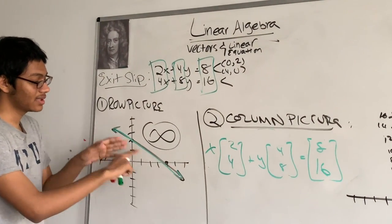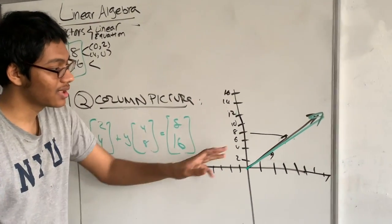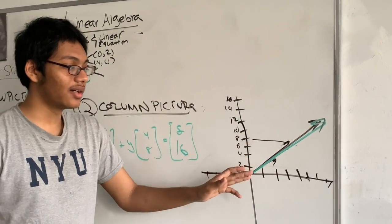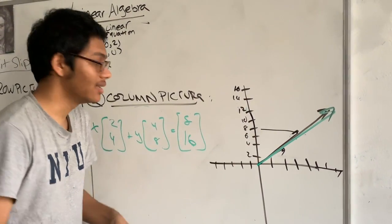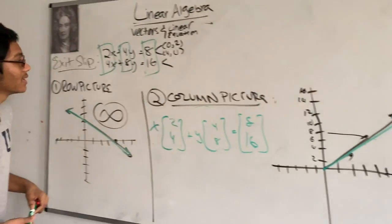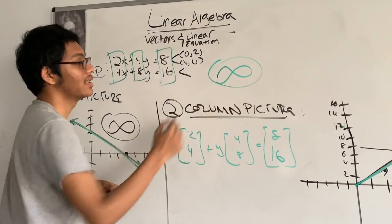The row picture tells me all my solutions lie on this line, meaning there's an infinite number of solutions. The column picture tells me all my vectors are scaled versions of each other. So they all once again lie on the same line. So as you can see, that's the solution to our exit slip, an infinite number of solutions.